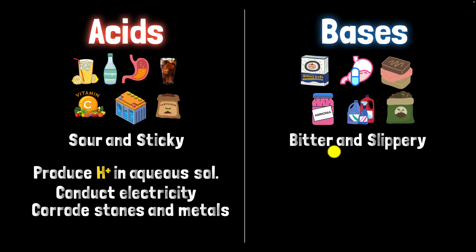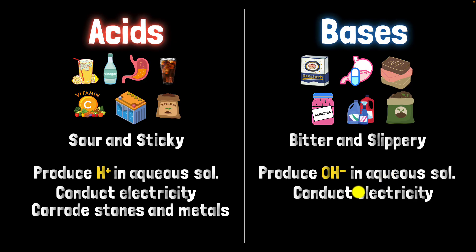What about bases? We started thinking of them as some things that is stuff that is bitter and slippery, but then we realized they are the stuff that produce hydroxide in aqueous solution. And again, because there are charged particles in aqueous solution, they're electrolytes, they too conduct electricity and they have cool properties like they can break down oil and grease. And that's one of the reasons why we use them in soaps and detergents.